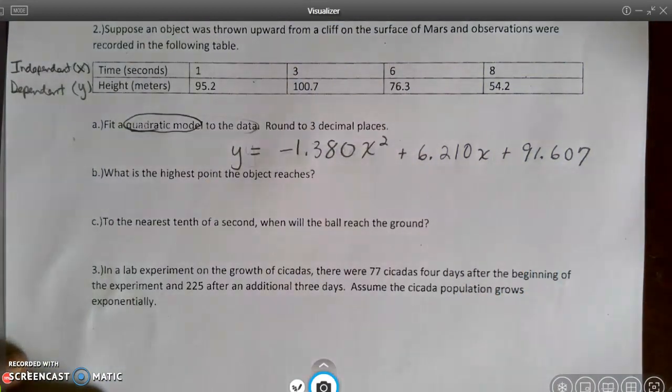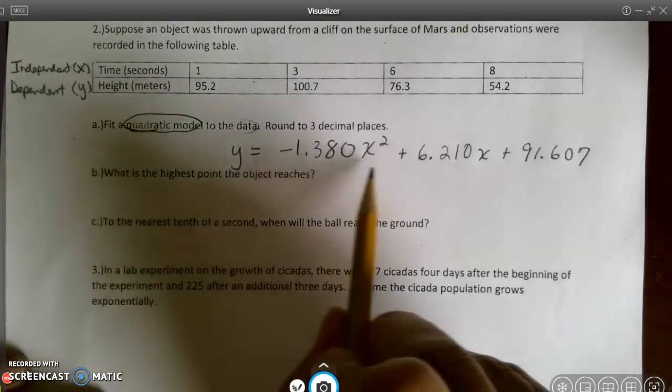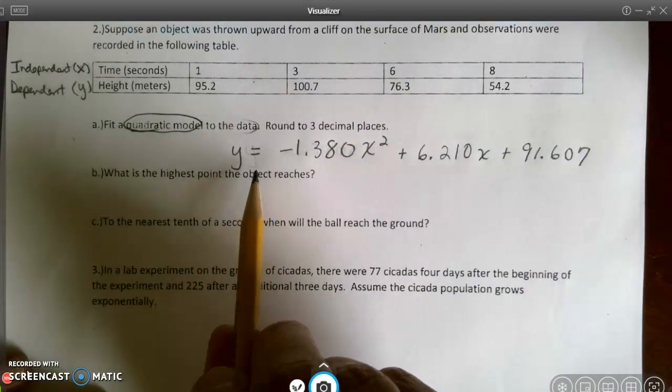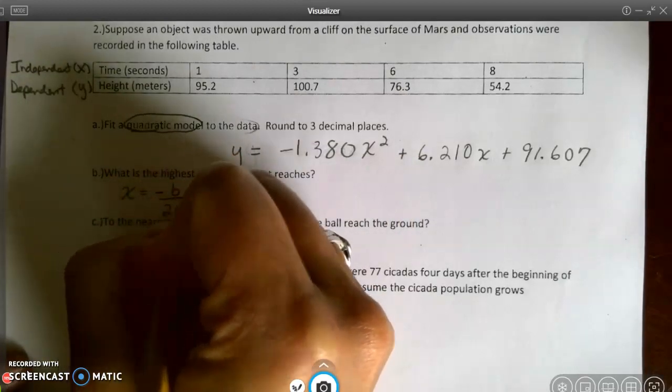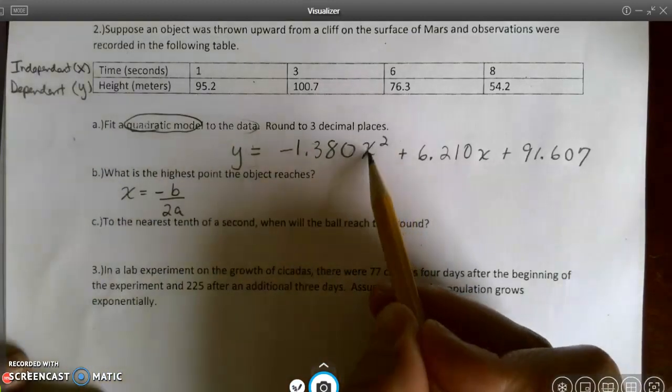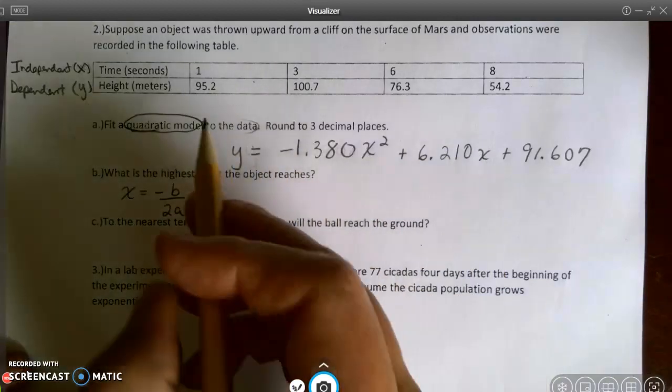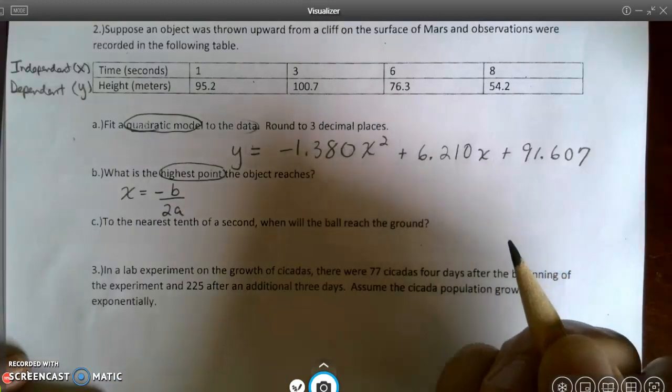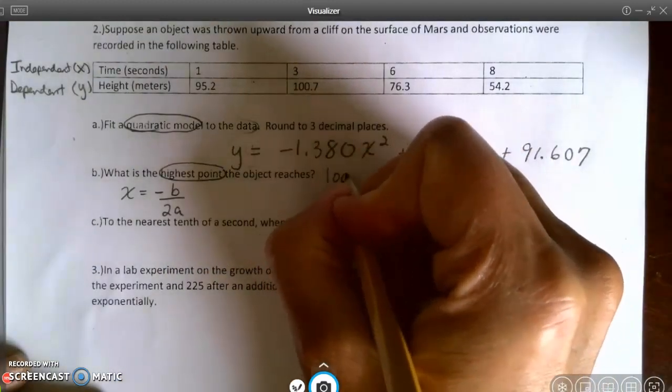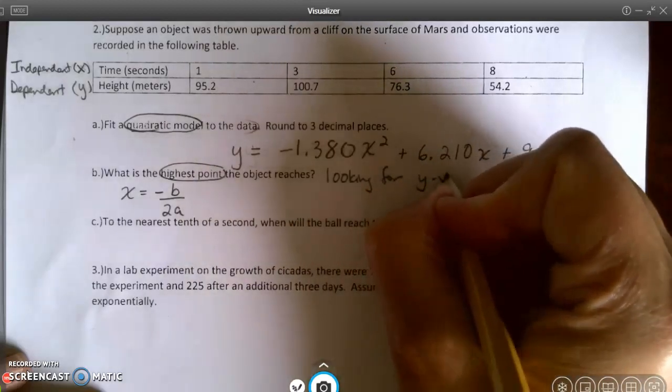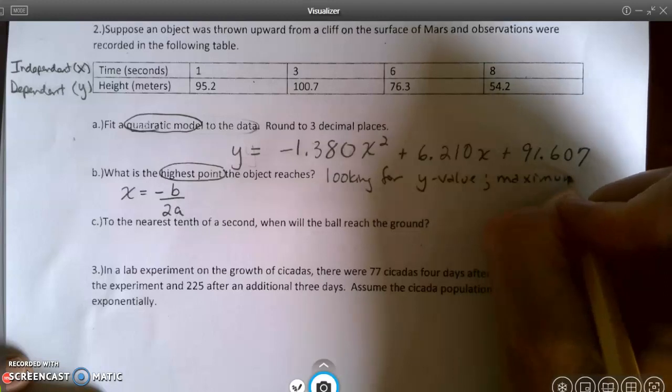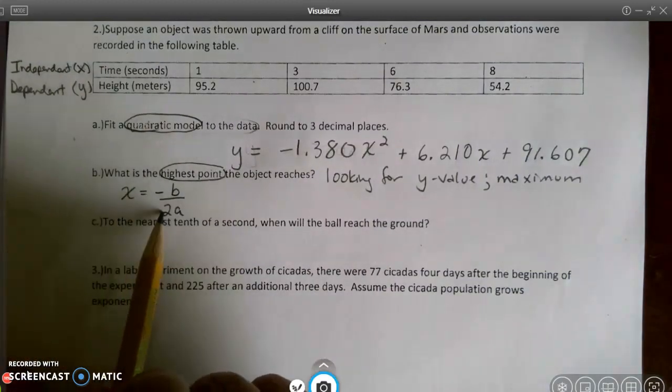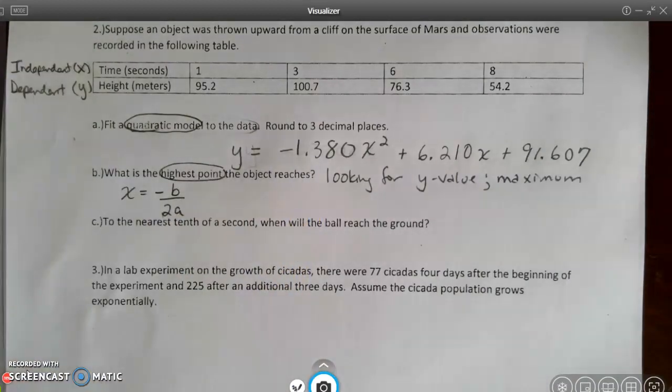All right. So I wrote down my quadratic model as we were looking at it from the calculator. I just want to remind myself that X is time and Y is height. So then it asks, what is the highest point the object reaches? All right. I've got a couple choices here. I can put this equation into Y equals, or I can find the X value by using that X equals the opposite of B divided by 2A. And once I find that X value, I could substitute it in and find the Y value, which is the highest point. Because height is Y, so I'm looking for a Y value. Maybe we should write that down. Looking for Y value. Because Y is height, I'm looking for the maximum. So this is one way to do it. I thought this time maybe we would use the calculator and give that a try. So we're going to go back to our calculator.